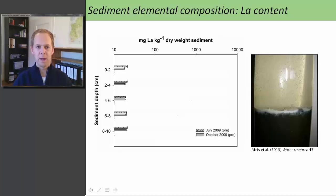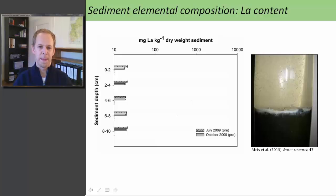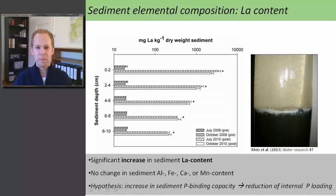The first question is how sediment composition changes after the application of PhosLoc. On the y-axis you can see sediment depth. I took sediment cores and sliced them. On the x-axis is the mass of lanthanum in the sediment. The gray bars show the situation prior to the application — in 2009, represented by July and October. There was already lanthanum in the sediment before the application. Because PhosLoc is a lanthanum-modified bentonite clay, we expected that the sediment lanthanum content would increase after the application, which we could show. The white bars show results in July and October after the application, indicating a significant increase in sediment lanthanum content.